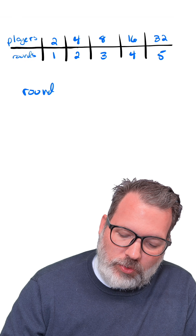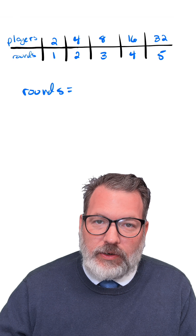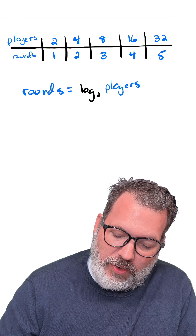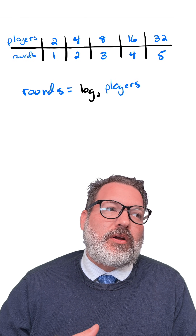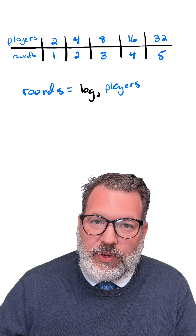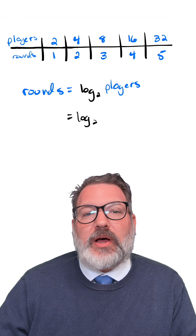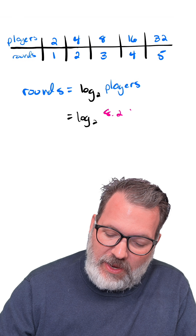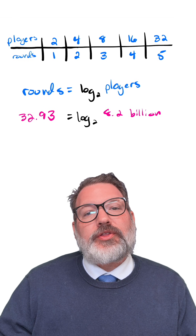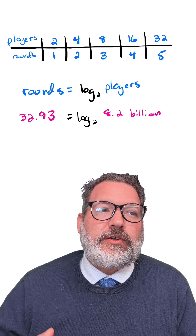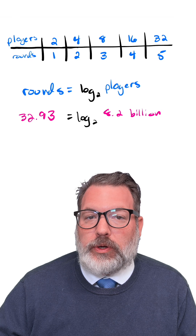The logarithm is the tool that will give us back the number of rounds based on the number of players. The log base two of the number of players is going to give us back the number of rounds. So if we have a tournament with every person on earth participating, all we need to do is take the log base two of our current population, which is roughly 8.2 billion. Log base two of 8.2 billion is 32.93, which means 32 rounds wouldn't be quite enough for the total population of earth, but 33 rounds would.